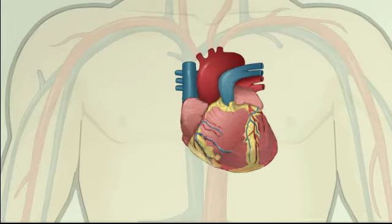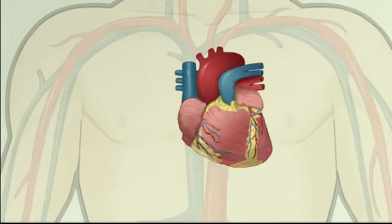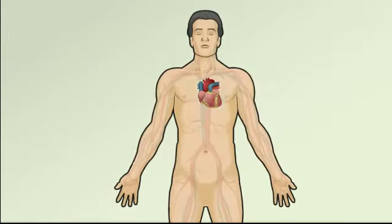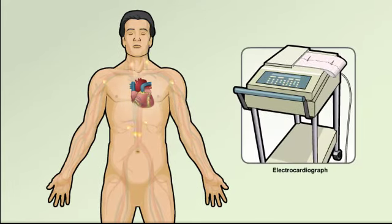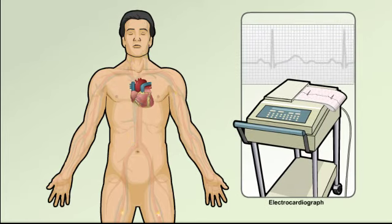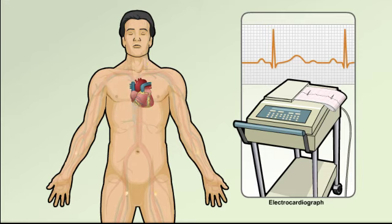Action potentials generated by heart cells produce weak electrical currents that spread throughout the body. These currents can be detected at the surface of the body and amplified using an instrument known as an electrocardiograph. The graphic recording produced by an electrocardiograph of the heart's electrical activity is called an electrocardiogram, or ECG.